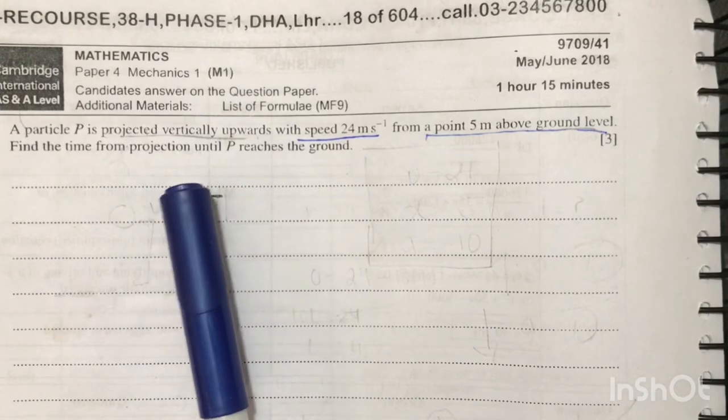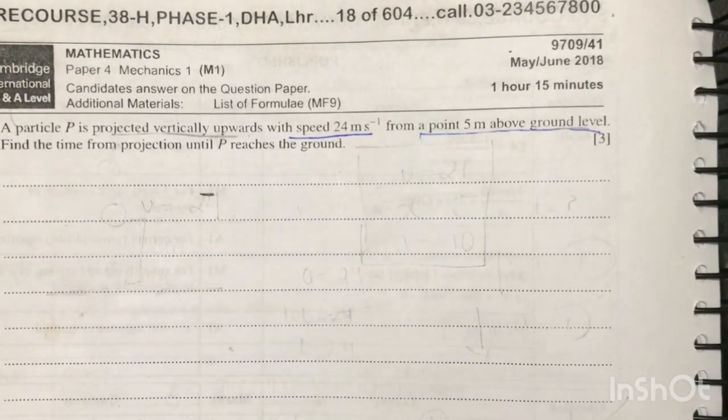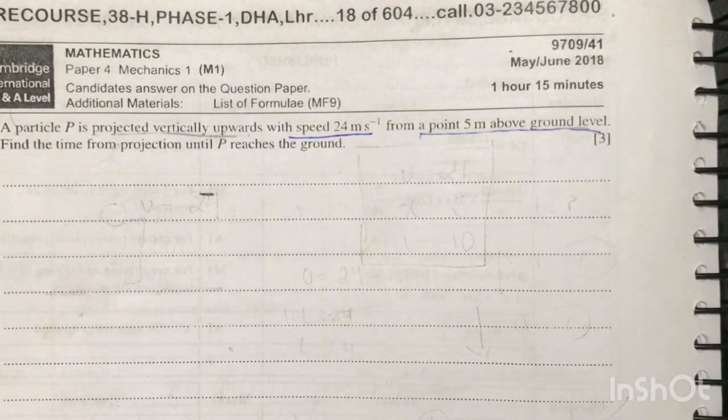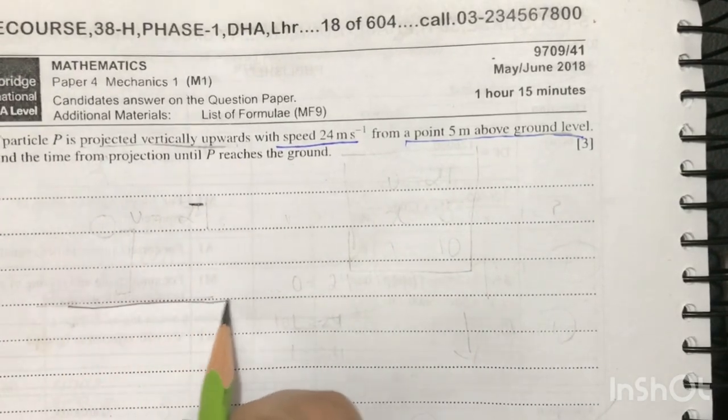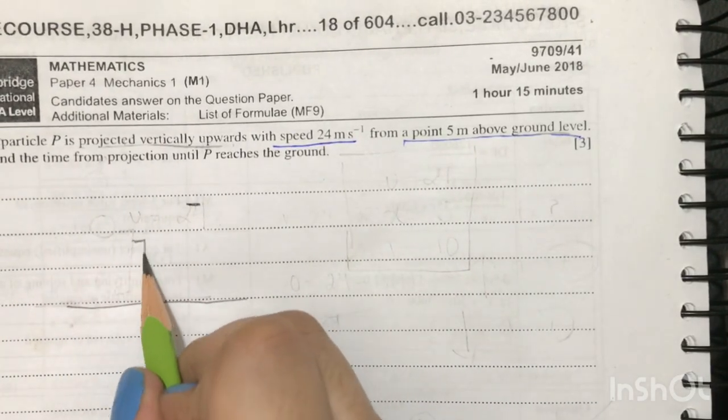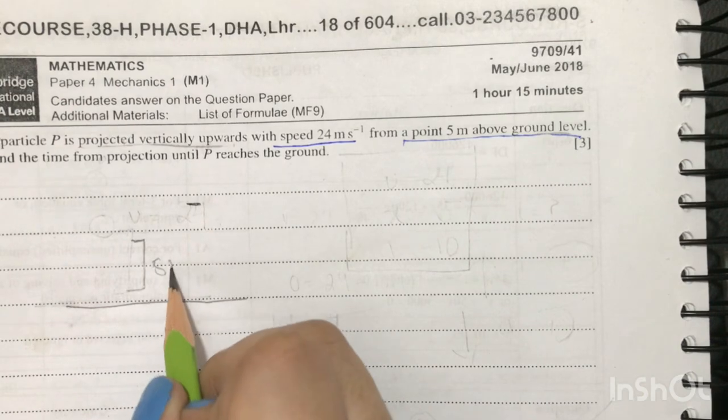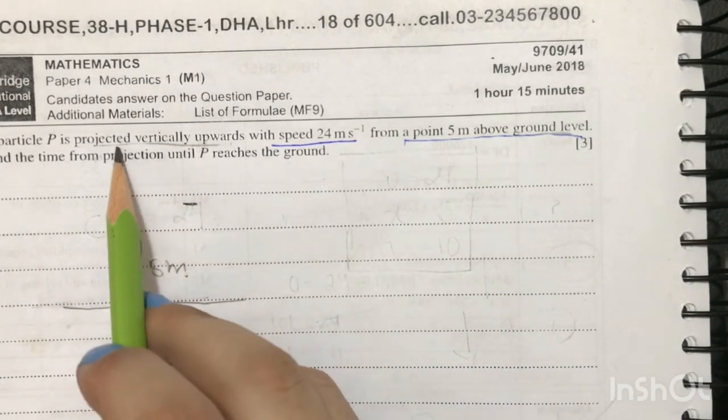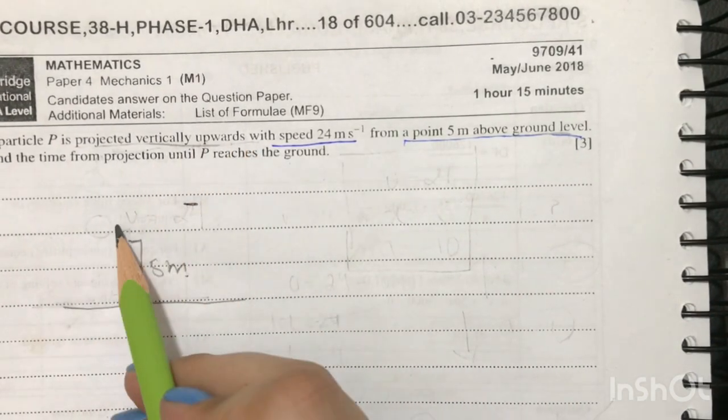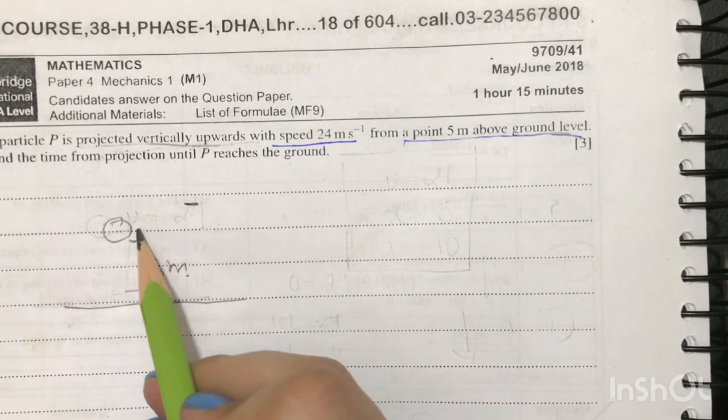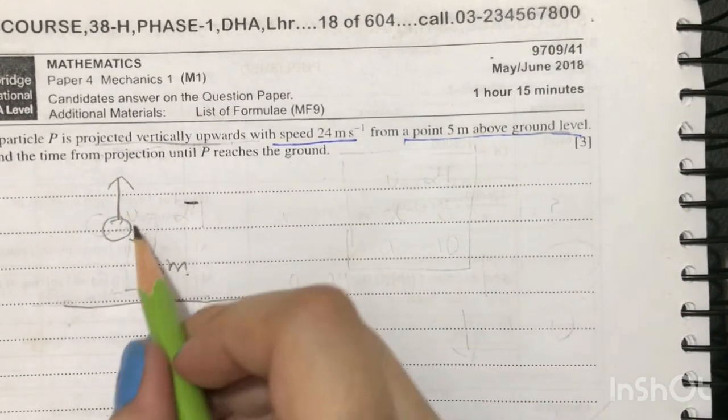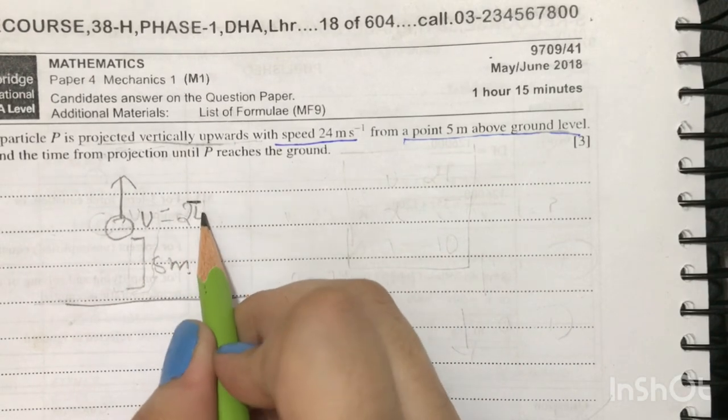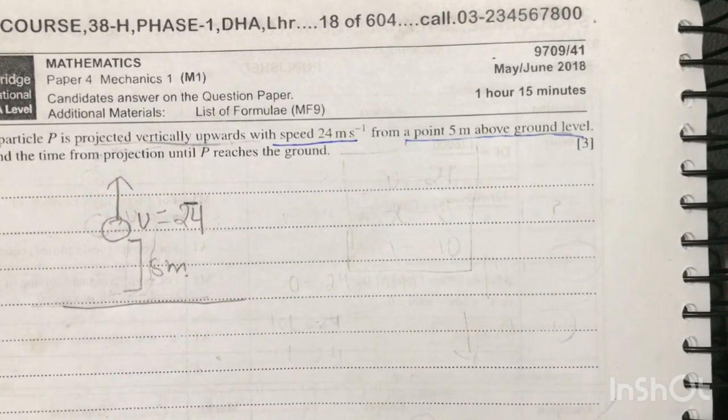Find the time from projection until P reaches the ground. So what they mean is that this is the ground level. Let's assume this is 5 meters and the particle is projected vertically upwards from this point, from above 5 meters. So it is projected upwards with the initial speed of 24.